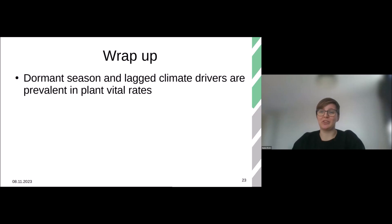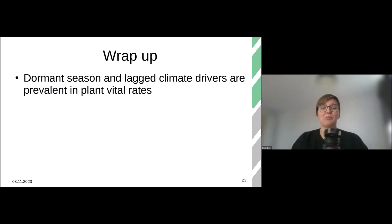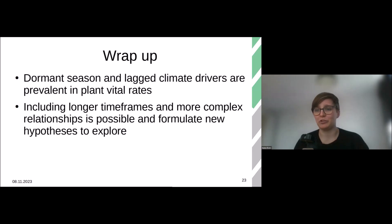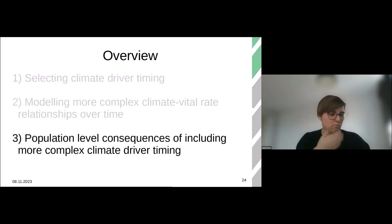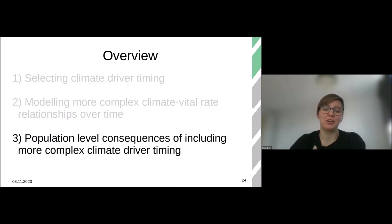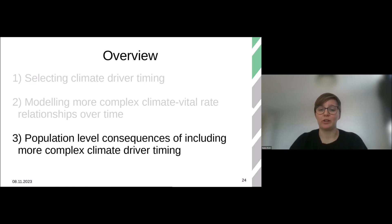That wraps up the second section. We already saw that dormant and lagged climate drivers are quite prevalent. But now I also want to add that including longer timeframes and more complex relationships is absolutely possible in your analysis and forecasts, and it allows you to formulate some new hypotheses that you can explore. That brings us to the last section: what sort of population level consequences could there be for including more complex climate driver timing?